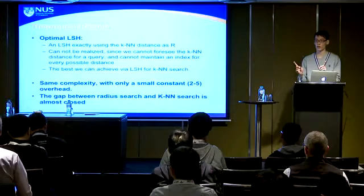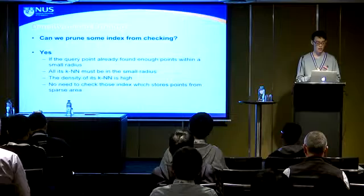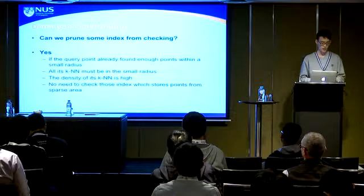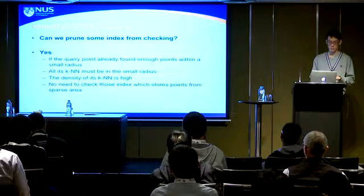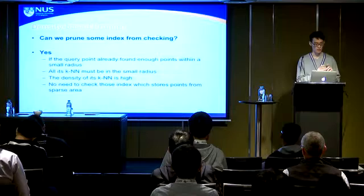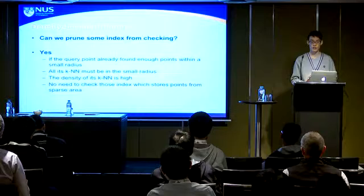We can also prune some index checks. Even though each point is stored in only one index, pruning is still possible: if the query already finds enough points within a small radius, then all its KNNs must be within that small radius because the local density is high. Points stored in large-granularity (sparse) indexes cannot have high density, so we have no need to check them. This is a density-based pruning strategy.